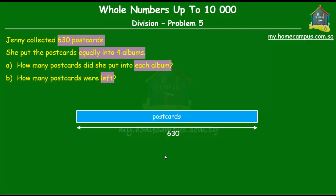She put the postcards equally into 4 albums, so each album would have the same number of postcards. After she had put all the postcards equally into these 4 albums, there were some postcards that were left. Obviously, the number of postcards that's left has to be smaller than 4. So it can be either 0, which means there were no postcards left, or 1 or 2 or 3. The remainder always has to be smaller than 4.